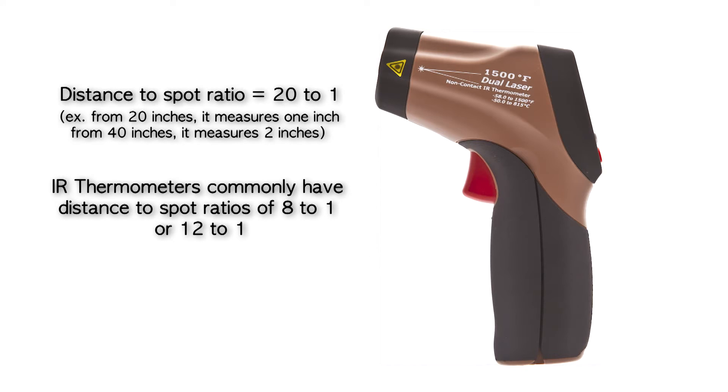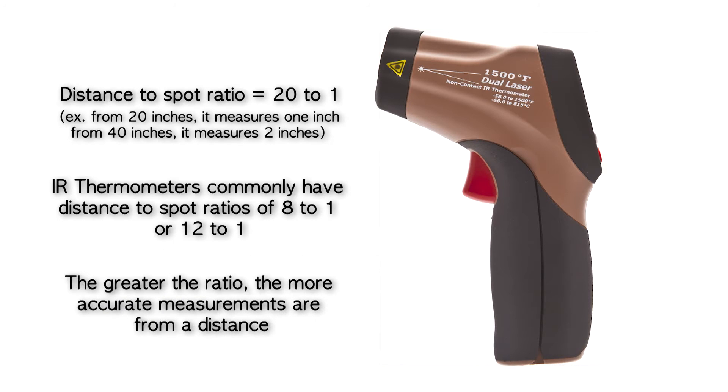IR thermometers commonly have distance to spot ratios of 8 to 1 or 12 to 1. The greater the ratio, the more accurate measurements are from a distance.